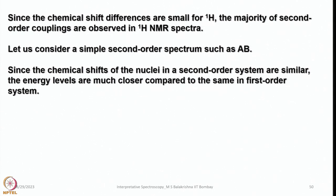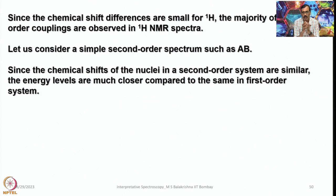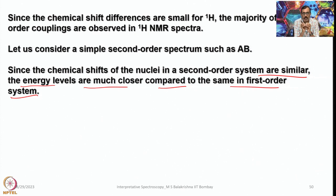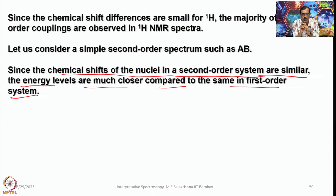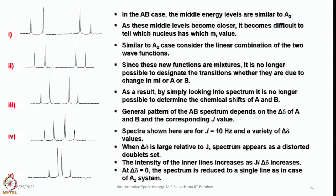Let us consider a simple second order spectrum such as AB. Since the chemical shifts of the nuclei in a second order system are similar, the energy levels are much closer compared to those in the first order. This is very important when we differentiate between first order and second order coupling. In the AB case, the middle energy levels are similar to the A₂ case. As these middle levels become closer, it becomes difficult to tell which nucleus has which Mᵢ value.